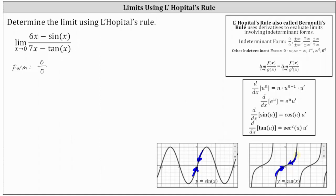So because the limit is in the indeterminate form of zero divided by zero, we can apply L'Hôpital's rule to help us determine the limit. L'Hôpital's rule states the limit as x approaches c of f of x divided by g of x equals the limit as x approaches c of f prime of x divided by g prime of x. So let's work on determining the derivative of the numerator and the derivative of the denominator.